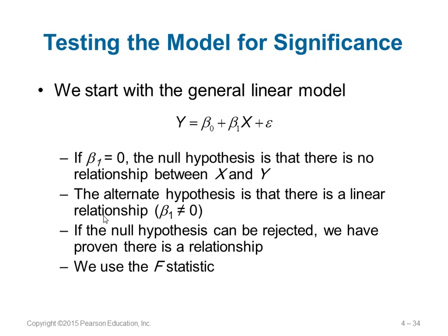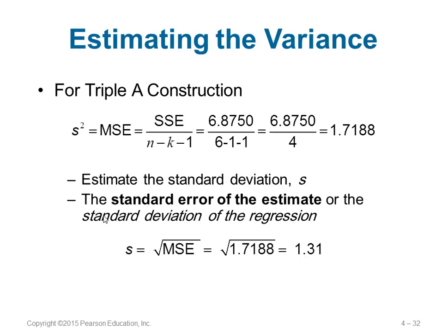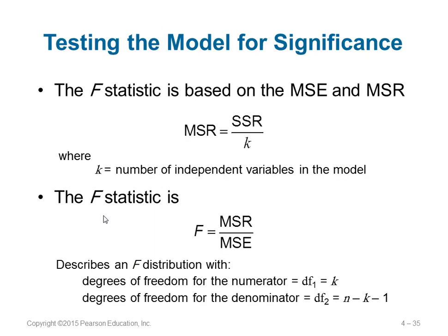If there is a linear relationship, then β1 should not be equal to 0 — we need to prove the null hypothesis can be rejected. We use the F-statistic, which is based on MSR and MSE. MSE = SSE / (n − k − 1), and MSR = SSR / k, where k is the number of independent variables. The F-statistic = MSR / MSE. There is also a table from which we get the critical F value using a distribution with DF1 = k and DF2 = n − k − 1.